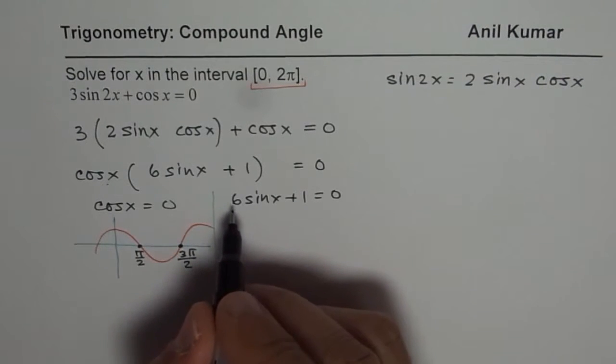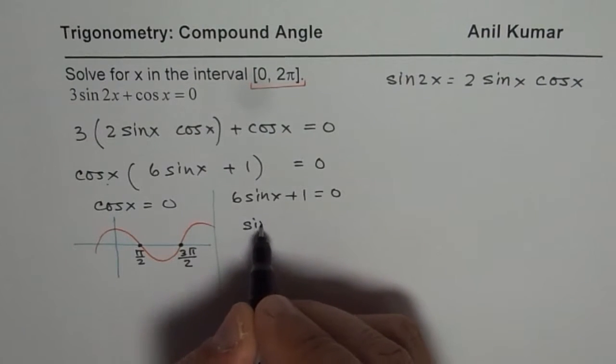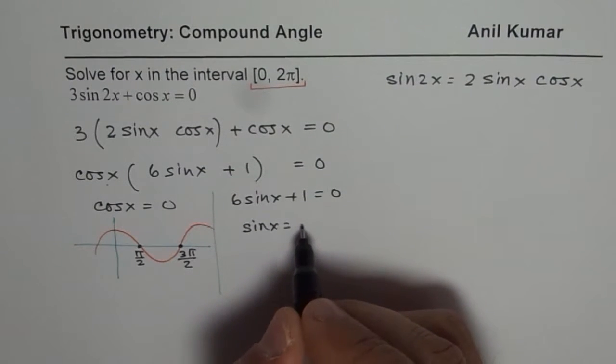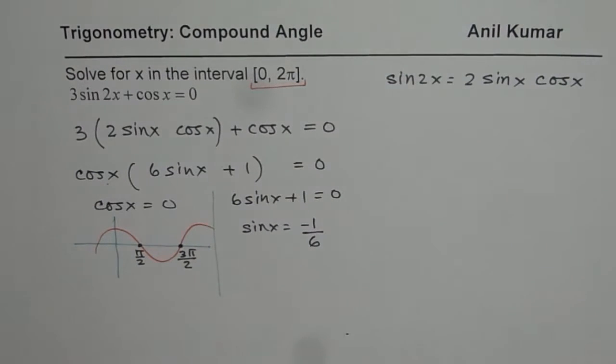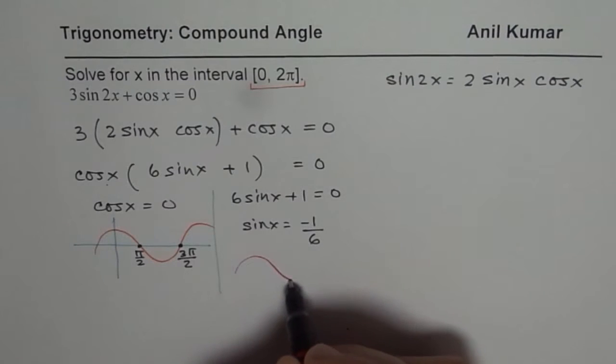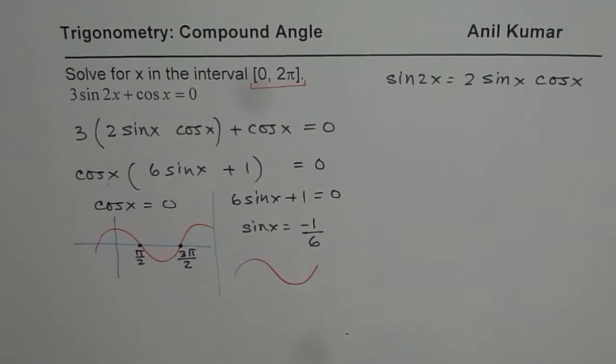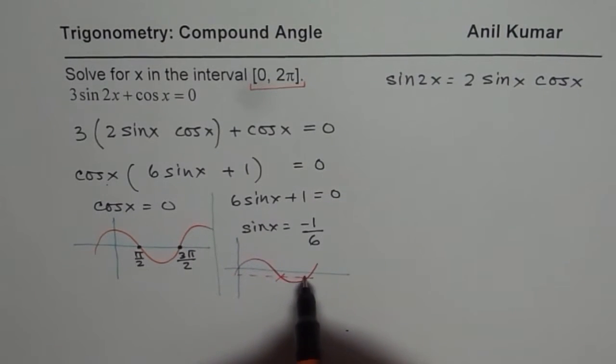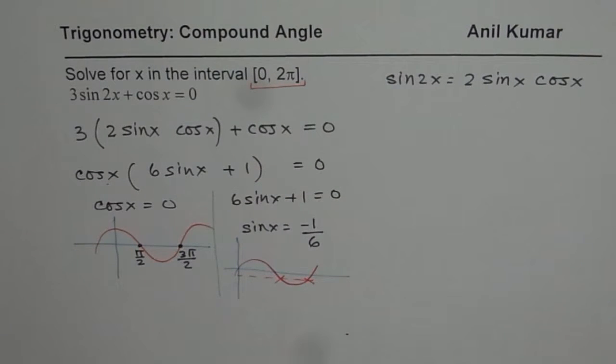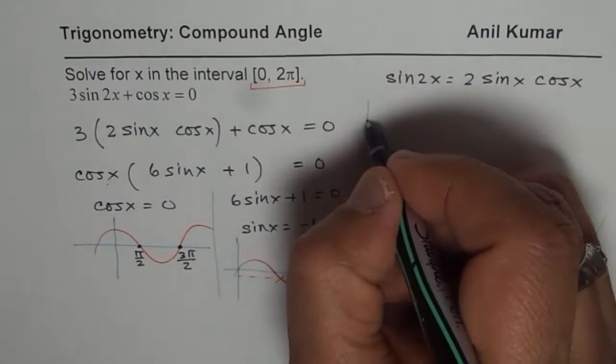Now here, 6sinx + 1 will give us sinx equals to -1/6. Right. So those, how many solutions do we expect from there? We expect two solutions from there. Right. Sin function, you know, is kind of like this. Right. Sin function is kind of like this. So it starts at 0 and if you say minus some value, then you are expecting these two solutions. Correct. So that is how we need to find two solutions for the second factor.